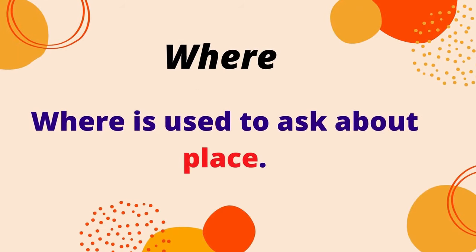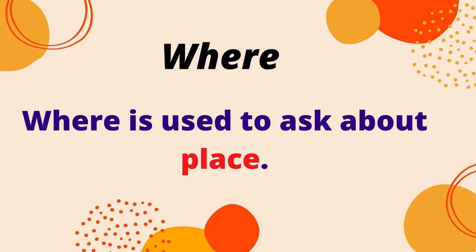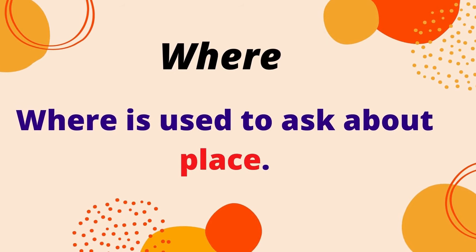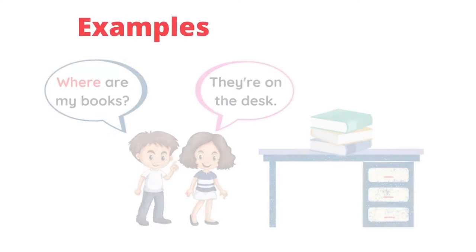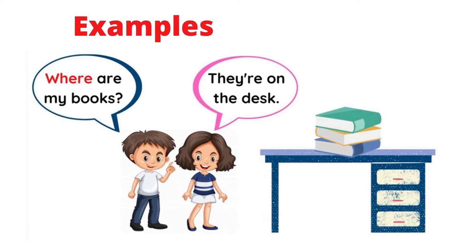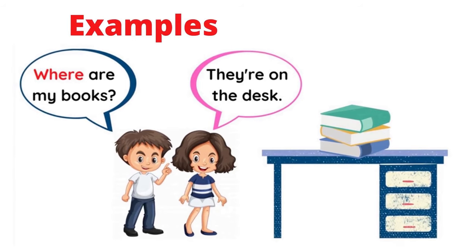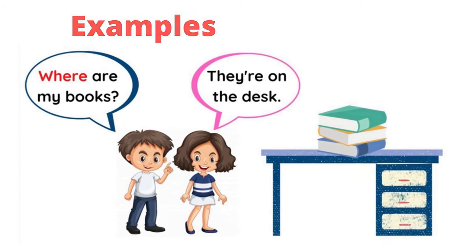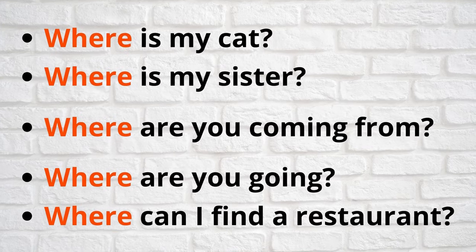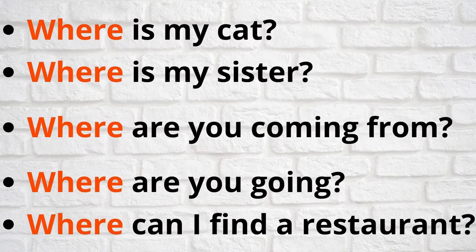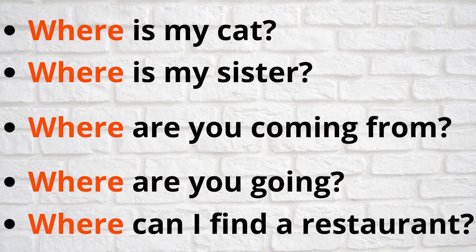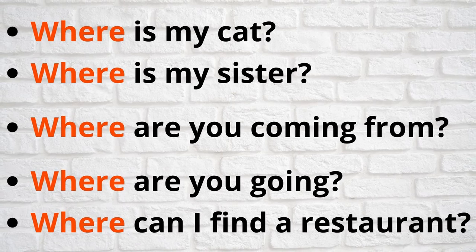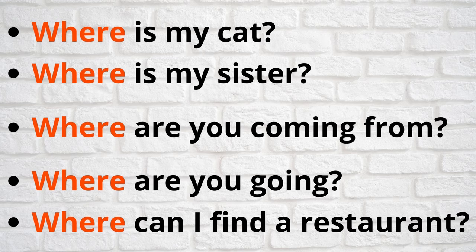Next we look at WHERE. WHERE is used to ask about place. Examples: Where are my books? They are on the desk. Other examples: Where is my cat? Where is my sister? Where are you coming from? Where are you going? Where can I find a restaurant?